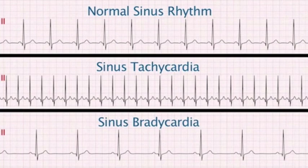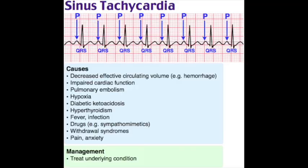Sinus tachycardia: heart rate over 100 bpm originating from the sinus node. Etiologies — physiologic (exercise, emotional stress, normal in children/infants) or pathologic (fever, hypovolemia, hypoxia, pain, infection, hemorrhage, hypoglycemia, anxiety, thyrotoxicosis, shock, sympathomimetics like decongestants and cocaine). EKG: regular rapid rhythm over 100 bpm with normal P waves, every P followed by QRS. Treat the underlying cause first; beta blockers (metoprolol) for persistent sinus tachycardia in ACS. Cardioselective beta blockers mnemonic: BEAM — bisoprolol, esmolol, atenolol, metoprolol.